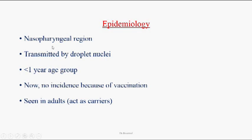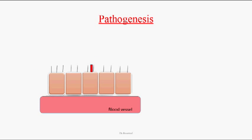Epidemiologically, these organisms are normally found in the nasopharyngeal areas of infected people and are transmitted by droplet nuclei. Higher incidence is seen in children below one year of age. Nowadays, incidence is low due to wide vaccination coverage for children. Adults can act as carriers because they already have immunity against these organisms.